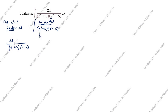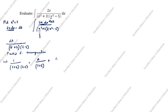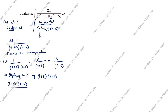Next, how do we solve this? We use partial fraction decomposition. Let 1 / [(t + 3)(t - 5)] = A / (t + 3) + B / (t - 5). Multiplying both sides by (t + 3)(t - 5).